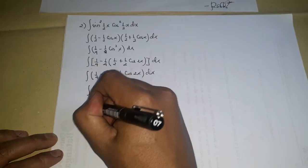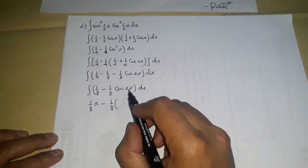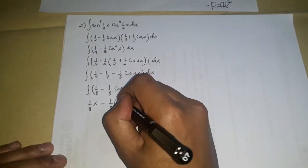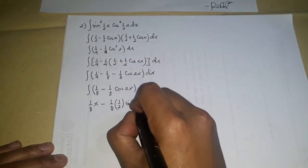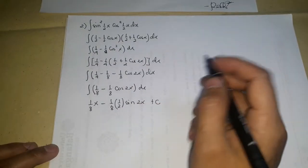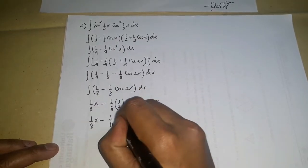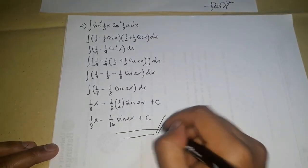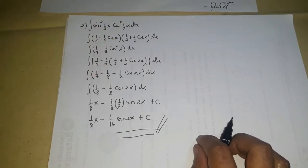Integrating: (1/8)x − (1/8)×(1/2)sin(2x) + C = (1/8)x − (1/16)sin(2x) + C. This gives the integral of sin²(x/2) cos²(x/2) dx.